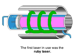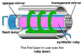Today, there are many varieties of lasers, but the ruby laser was the first. At the core of the ruby laser is a bar of synthetic ruby. At each end of the bar is a mirror, one of which is transparent enough to allow light to pass.